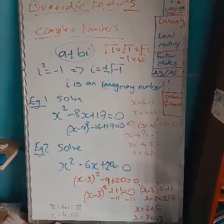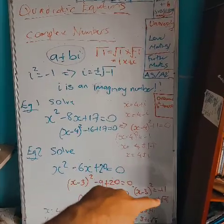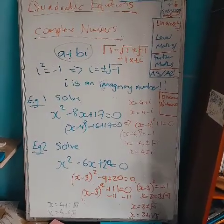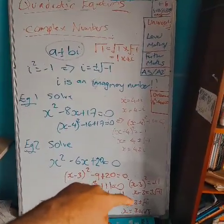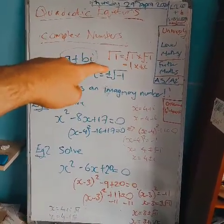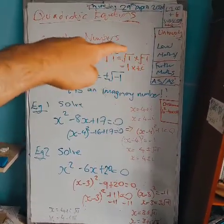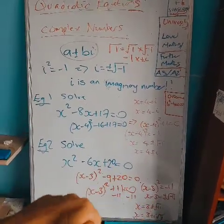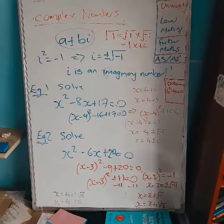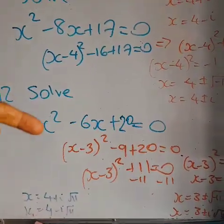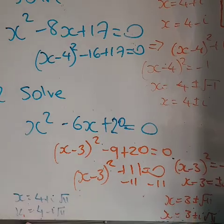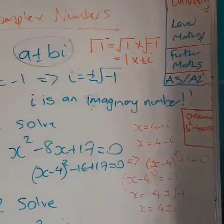Taking the square root of both sides (the opposite of squaring): x minus 3 equals plus or minus the square root of minus 11. Adding 3 to both sides: x equals 3 plus or minus the square root of minus 11. Since the square root of minus 11 equals the square root of minus 1 times the square root of 11, and the square root of minus 1 is i, we get x equals 3 plus or minus i root 11. So the solutions are x equals 3 plus i root 11 and x equals 3 minus i root 11.